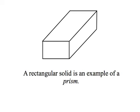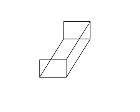A rectangular solid is an example of a prism. Start with a rectangle, make a parallel rectangle, connect the corners, and we have a rectangular solid. I've chosen to make three of the edges dotted to indicate which edges would not be visible if all of the faces were not clear.